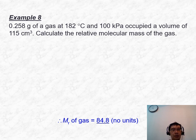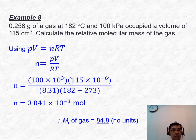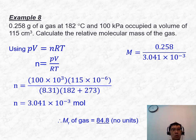To solve example 8, use PV = nRT. The challenge is correct unit conversion: temperature in Kelvin, pressure in Pascal, and volume in meter cubed. This gives 3.041×10⁻³ moles. Then, molar mass equals mass divided by number of moles, giving 84.8 g/mol. Since they asked for relative molecular mass, Mr = 84.8 with no units.